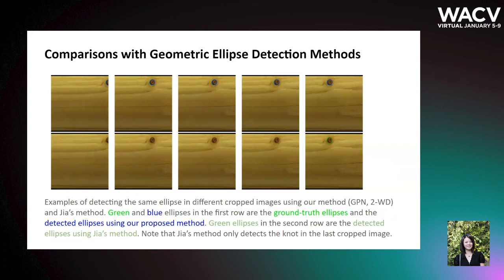We also compared our method with some geometric ellipse detector methods. It turns out that some geometric ellipse detector methods fail to detect most of the knots in the lumber images dataset, and their detection performance is sensitive to the positions of ellipses in images. For example, the geometric detection method we compared only detected the knot in the very last cropped image out of these five examples of the same knot.